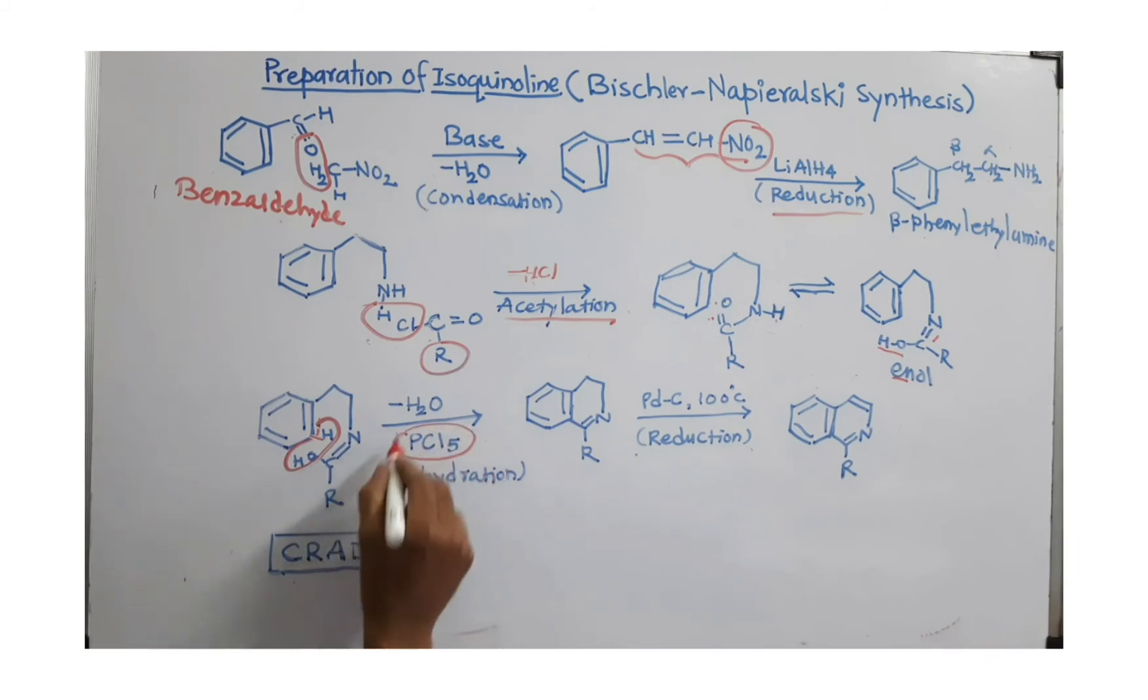And that can be done by using phosphorus pentachloride. This is dehydration because we are removing water. Again, this is called cyclo-dehydration because we are going to form a cycle.